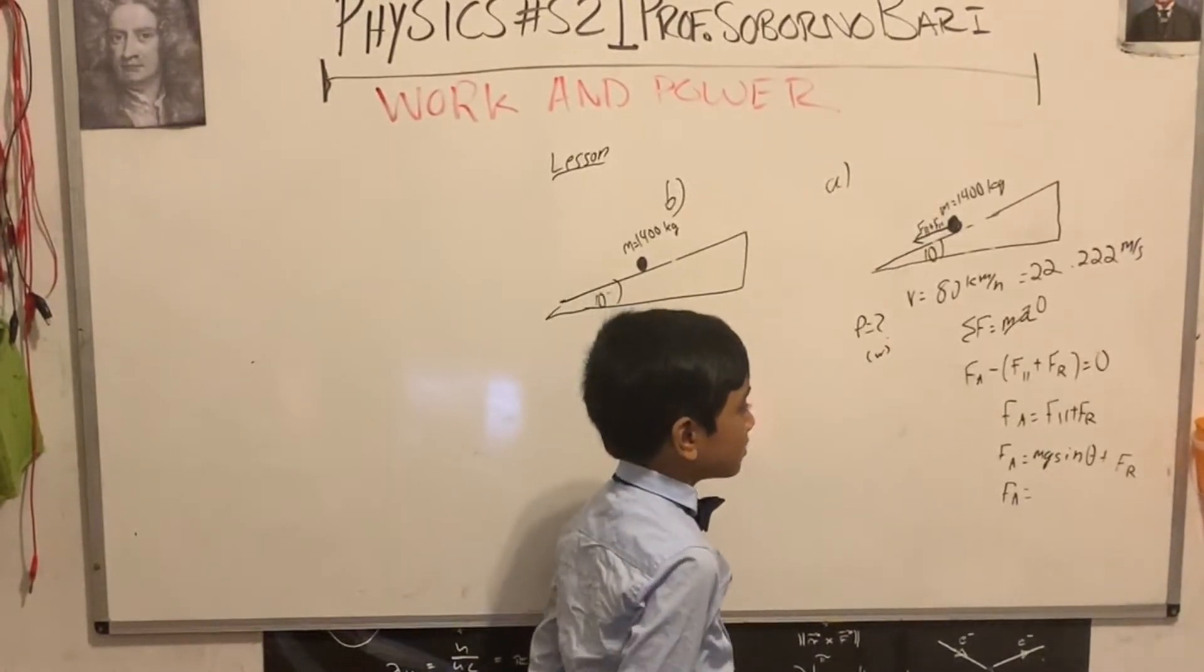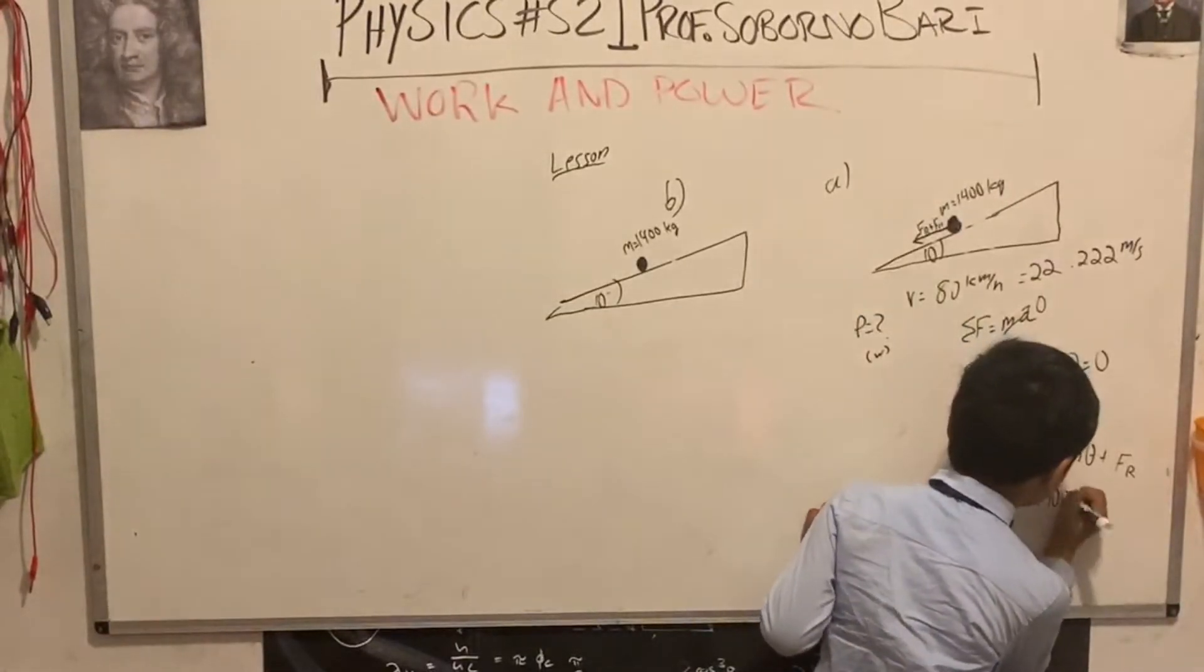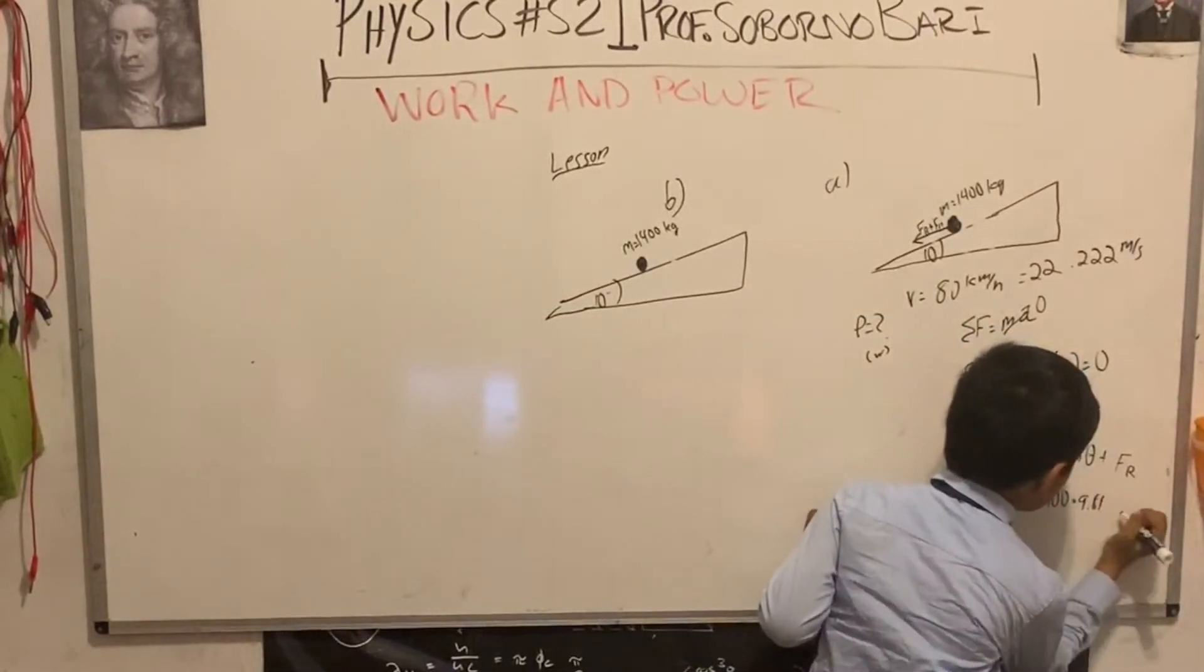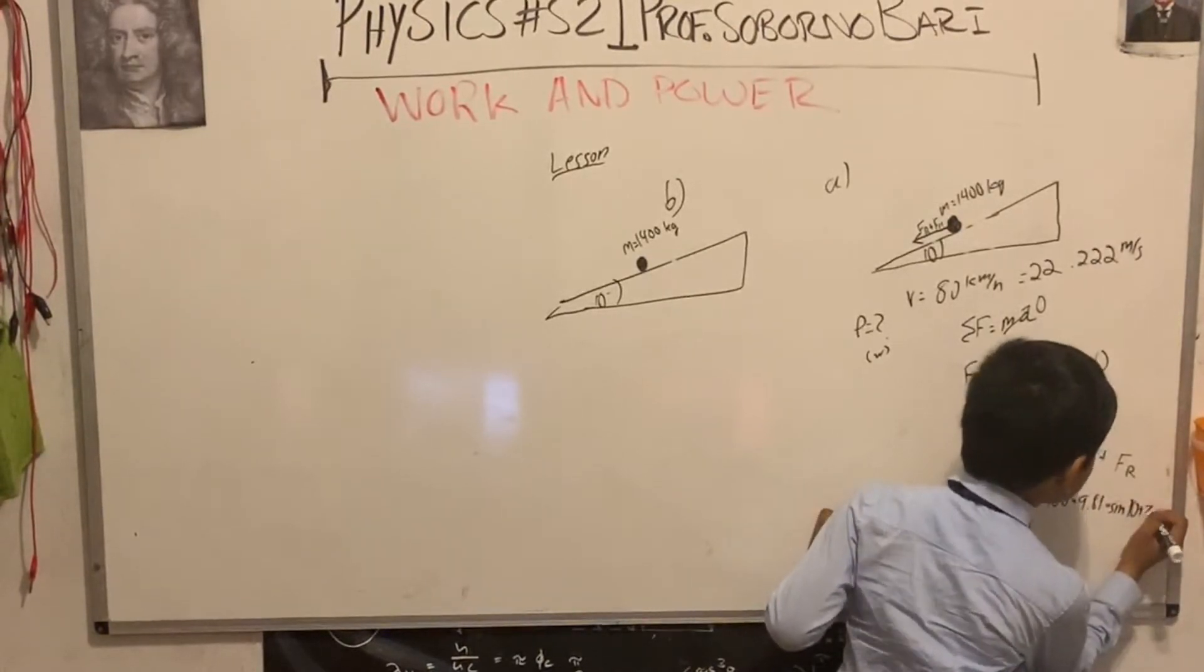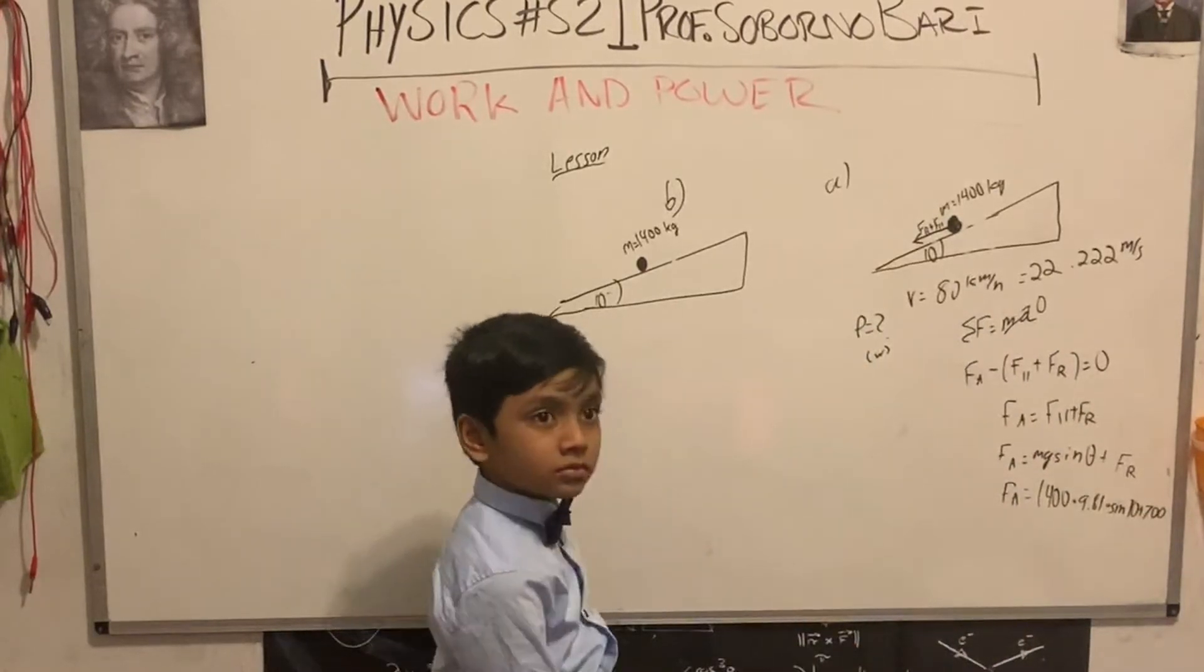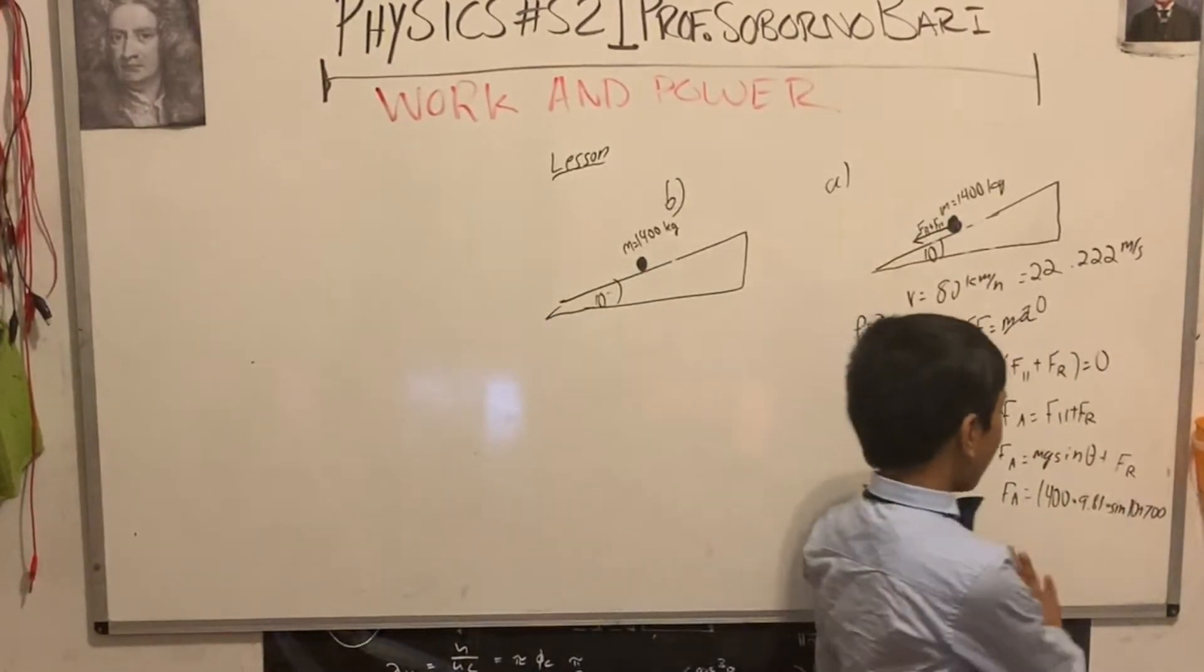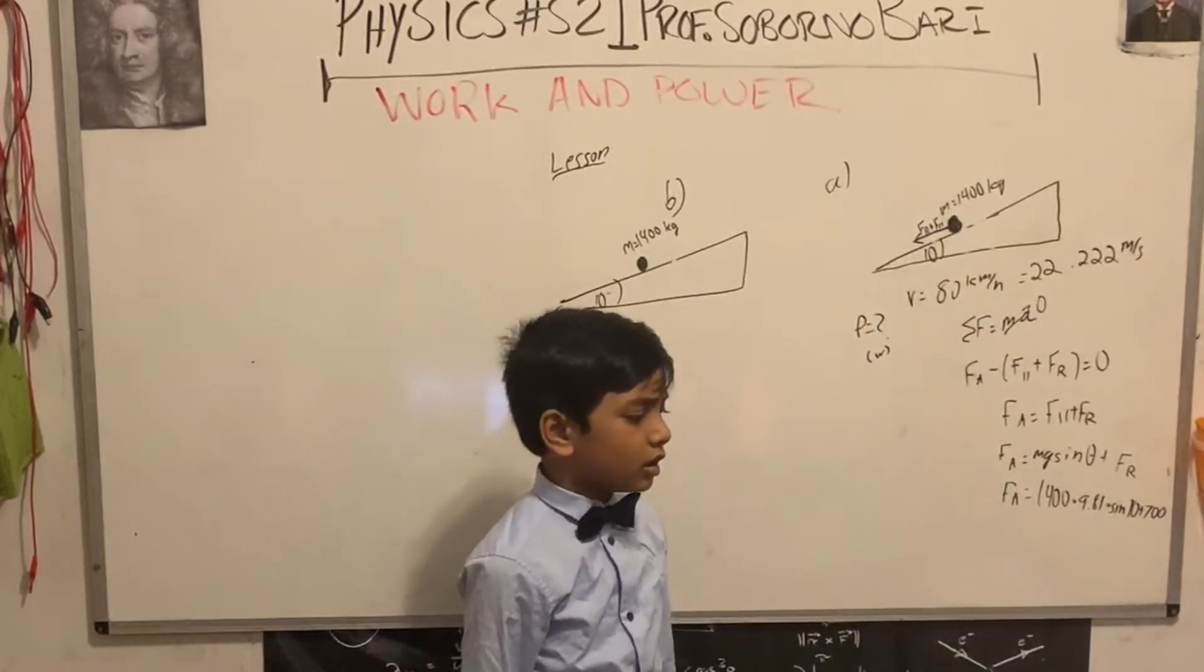F_A is, M is 1400, g is 9.8, and sine 10 degrees, plus 700. We won't write the units right now. We'll write it on our answer.